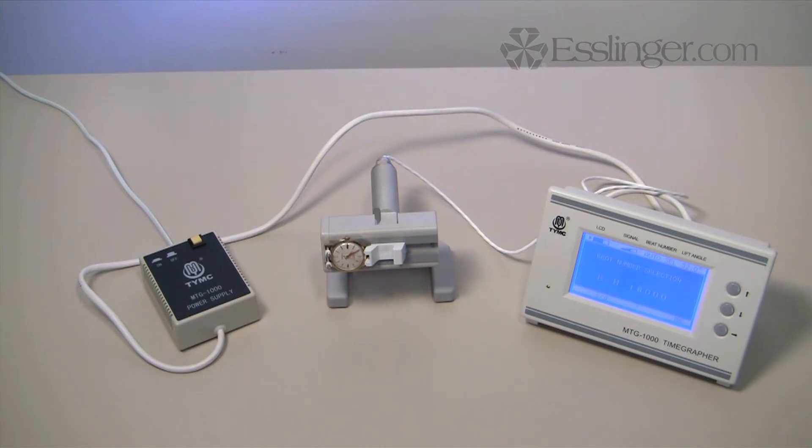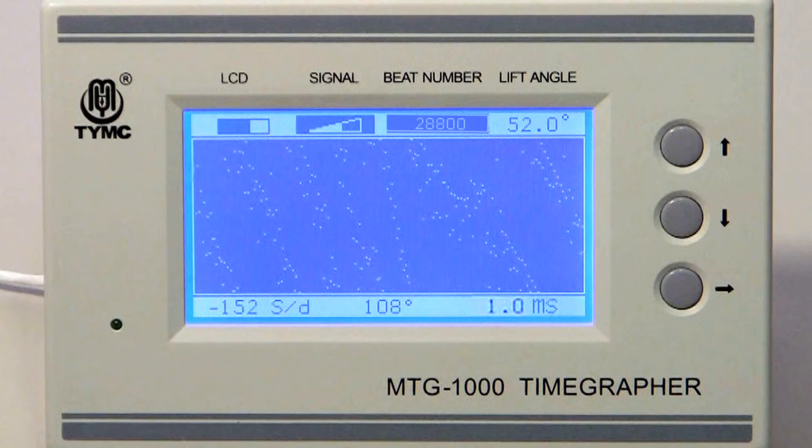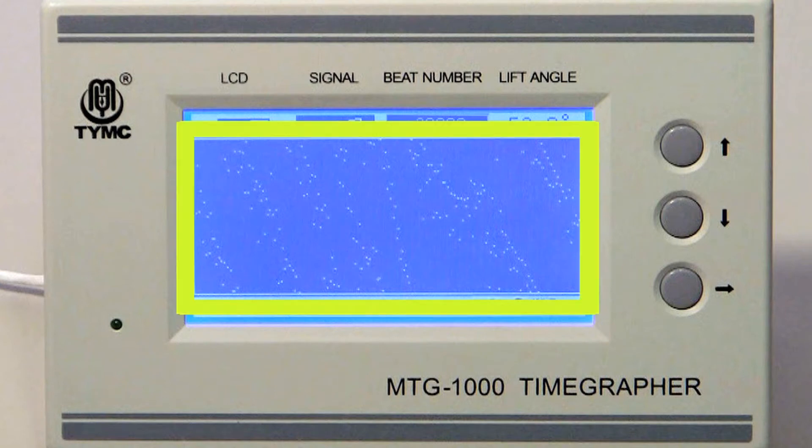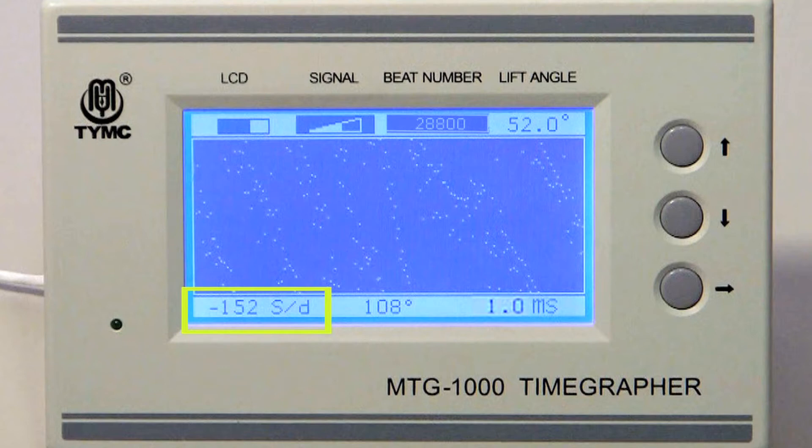The MTG1000 tests the performance of the various timing mechanics in a watch. It has a large and easy-to-read LCD screen to show you the amplitude, the beat noise, the watch rate in seconds per day, either fast or slow, and the beat error in milliseconds.